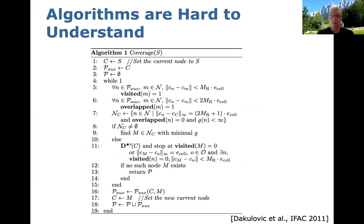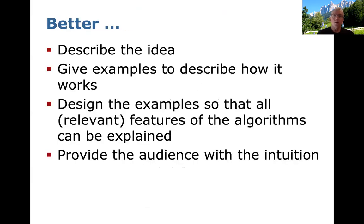For example, presenting a complex algorithm as-is to the audience will be extremely difficult, and it's very unlikely that the majority of the audience will grasp the idea behind it. It's way better to describe the idea, give examples of how it works, and design those examples in a way that covers the relevant features of the algorithm, providing the audience with the intuition behind it. If you can, briefly explain how the algorithm works after all those examples — that is fine. But in principle, I prefer the audience being able to understand what is being presented rather than being lost because it is too complicated.